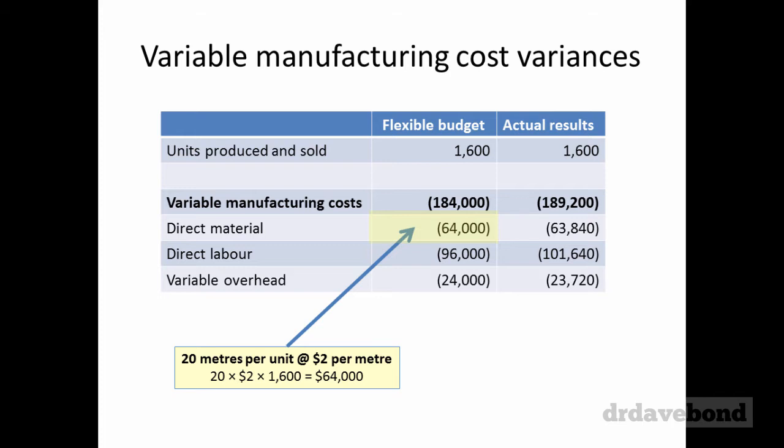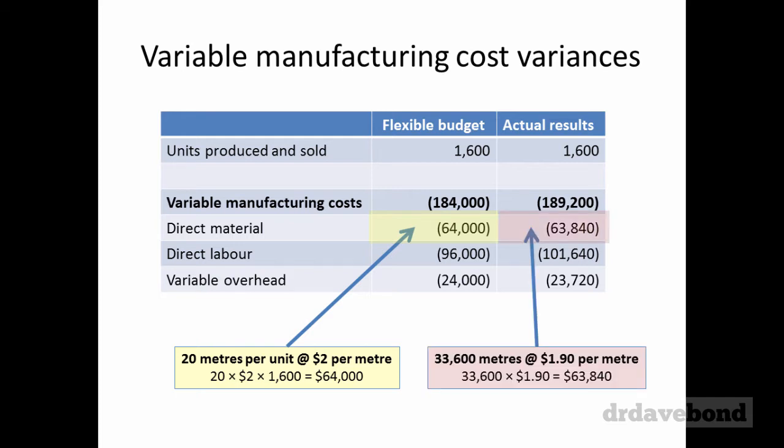The first one we'll look at is direct material. The $64,000 flexible budget amount came from built-in standards the company set before this period — to make each unit requires 20 meters of material at $2 per meter. So 20 × $2 × 6,000 units gives $64,000. For actual results, they used 33,600 meters at $1.90 per meter, which multiplied out gives $63,840.